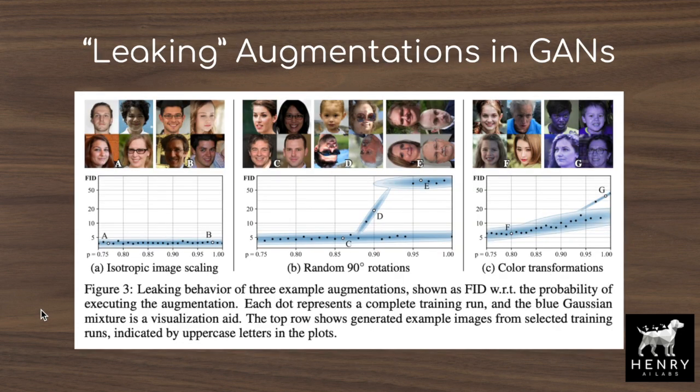One of the most common ways to avoid overfitting in image classification and computer vision is to introduce label-preserving transformations in the form of data augmentation — things like rotations or shifting the blue color histogram. For a cat versus dog classification task, rotating a dog's face 30 or 15 degrees doesn't change its label and make it suddenly a cat. But adding these slight transformations really helps prevent the discriminator or classifier from overfitting on a small dataset.